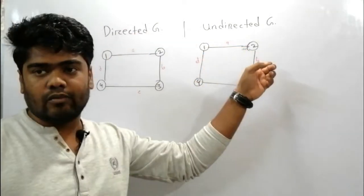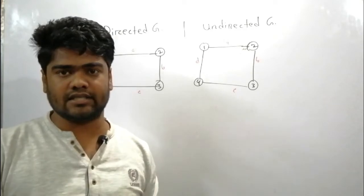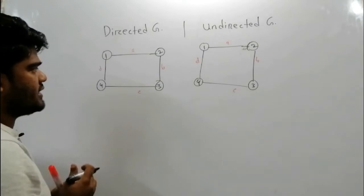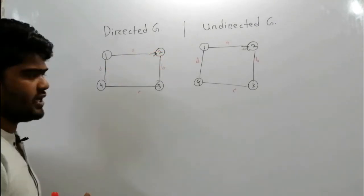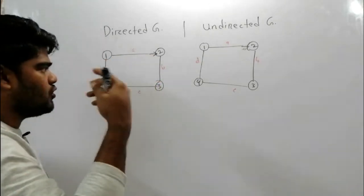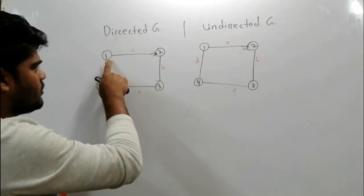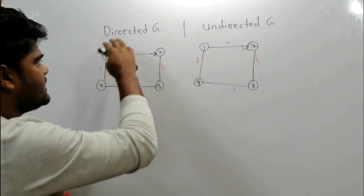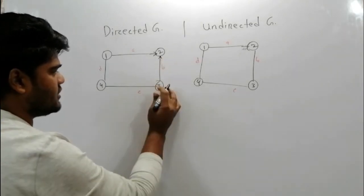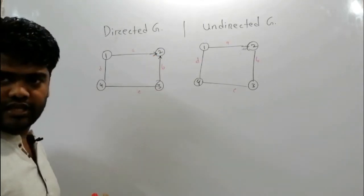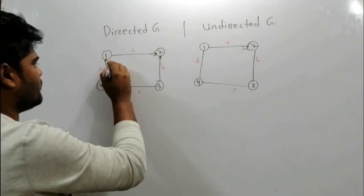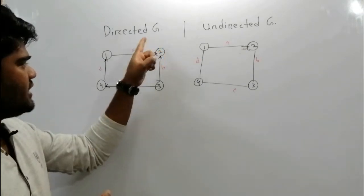Now for the undirected graph, the vertex count is also 4. Let's look at this vertex. The vertex shows 2 vertices, 2 number vertex. This is a directed graph, vertex number 2, then 3, then 4.